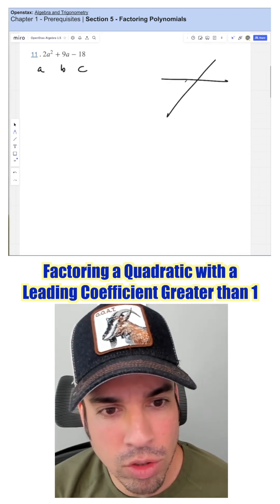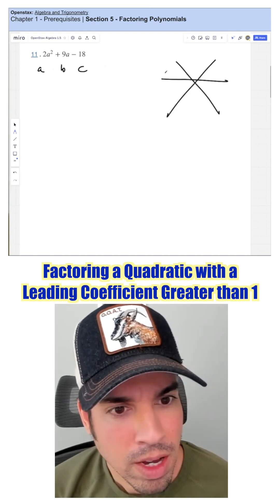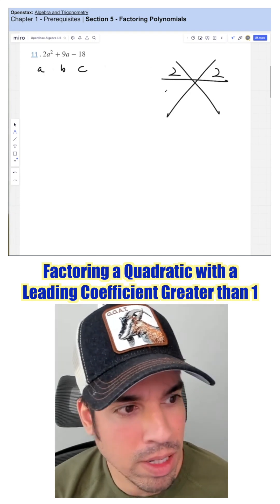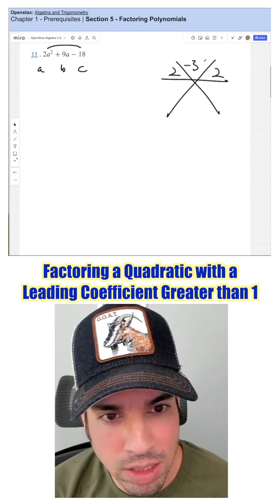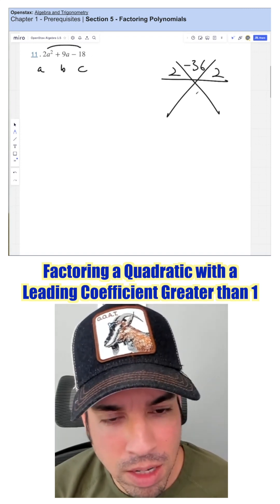Then I'm going to draw this out, my star method here. I'm going to place the A's up top like so. A times C, 2 times negative 18, negative 36 over here. And the B on the bottom as 9.